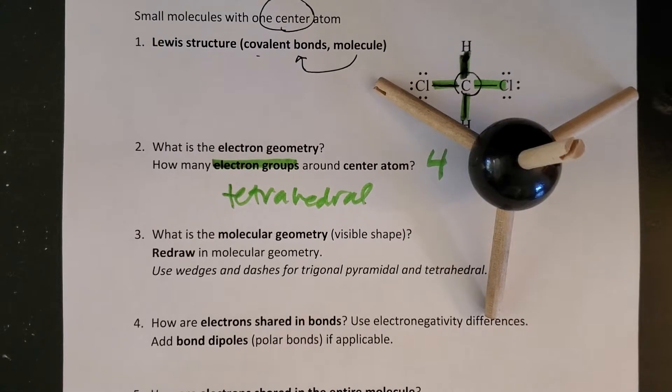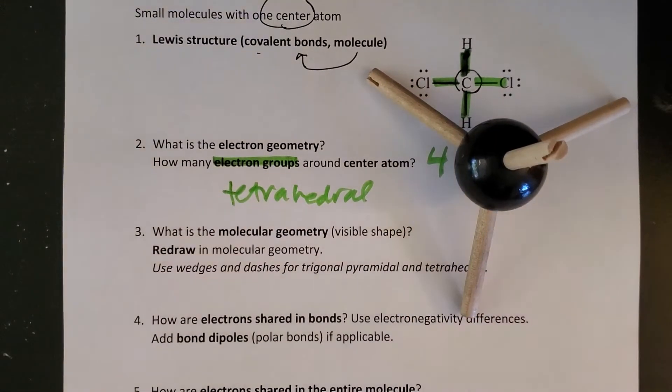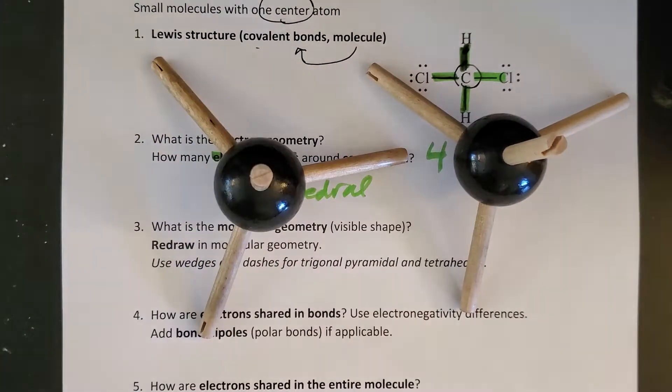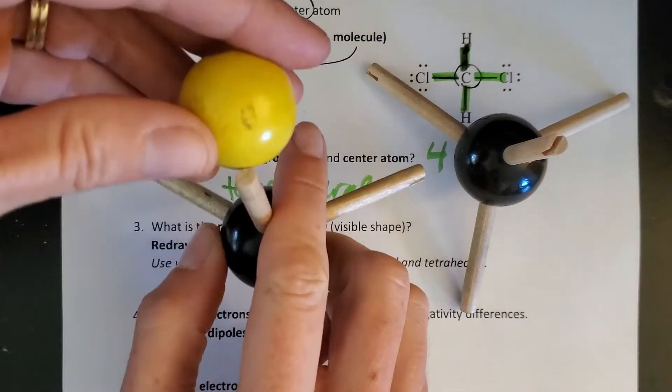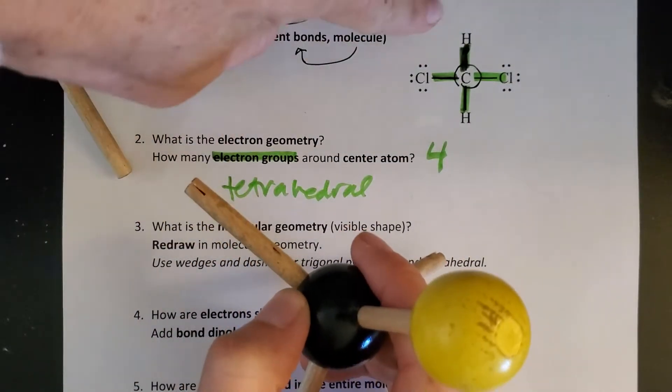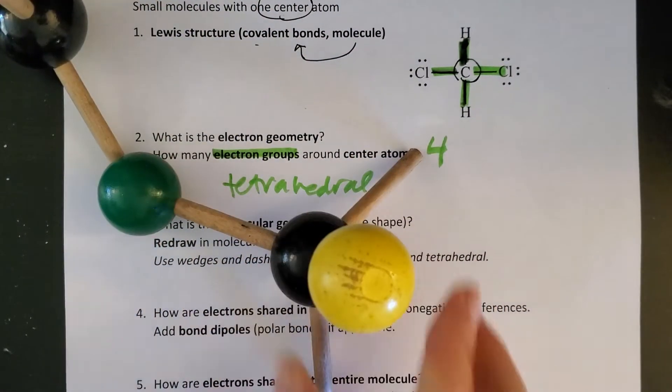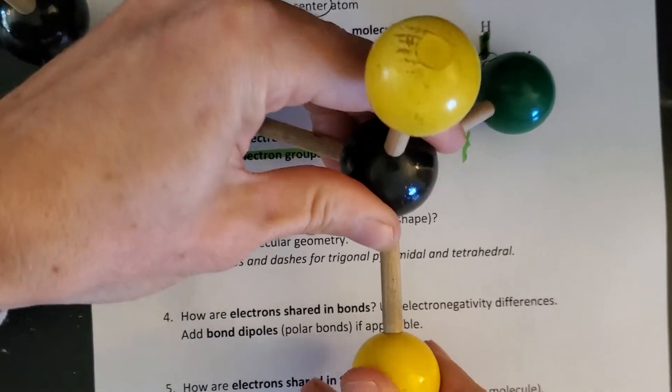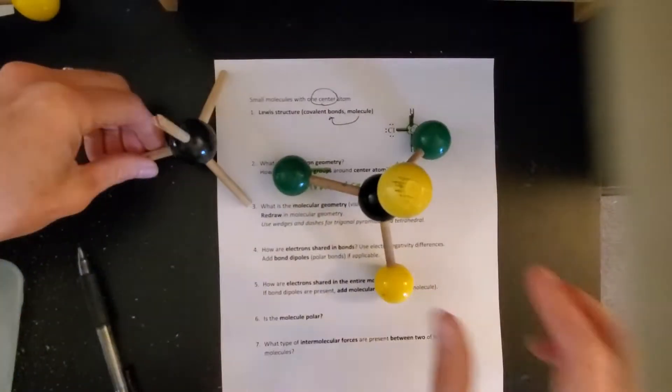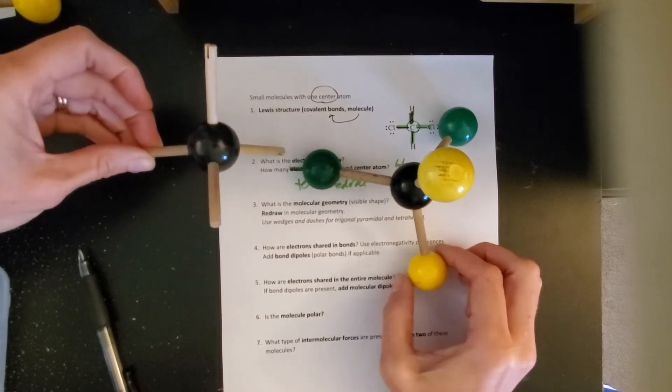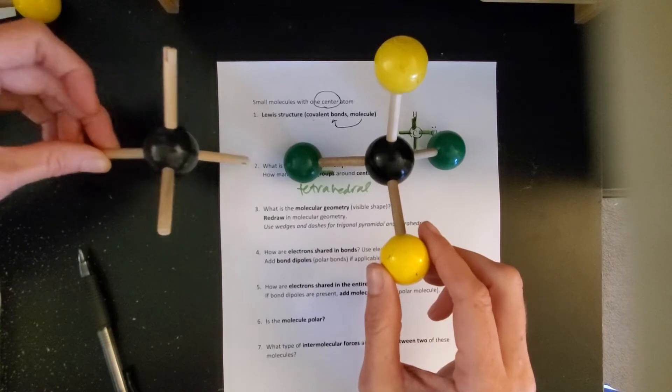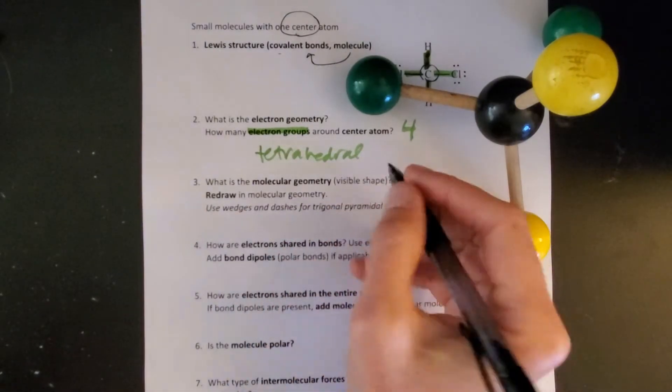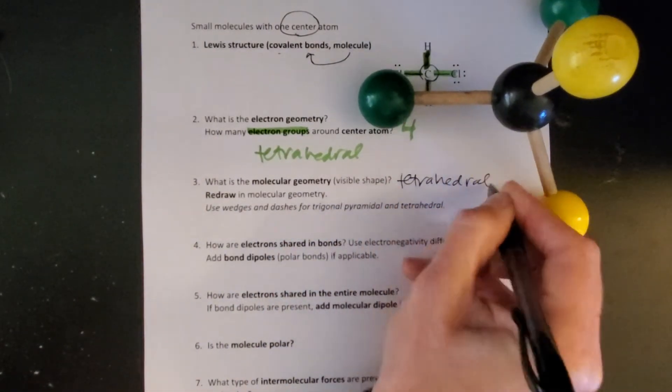Now molecular geometry is the visible shape, so once we put atoms onto these electrons what does it look like? Then we will redraw. Looking at this molecule, I've got hydrogens and two chlorines on opposite sides in the Lewis structure. I notice that my entire tetrahedral electron geometry shows up in my molecular geometry. There's an atom at every location, so my molecular geometry is the same as my electron geometry and will also be tetrahedral.